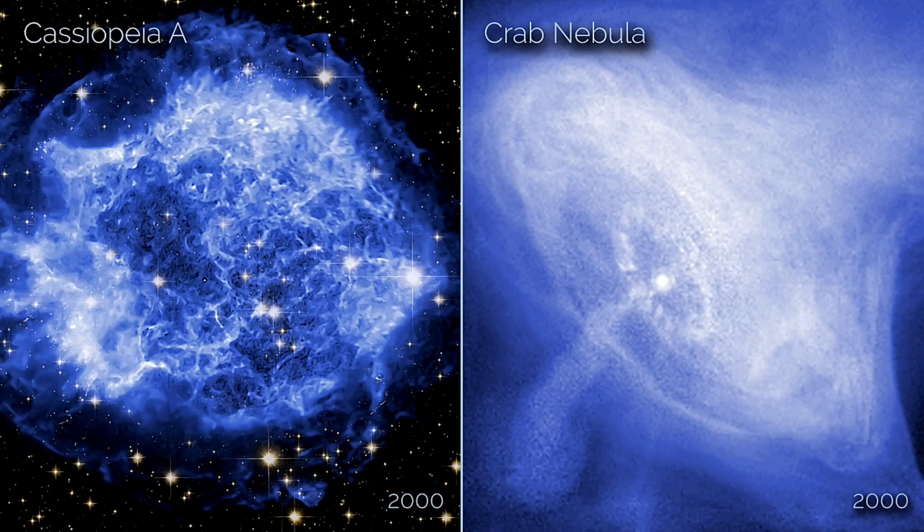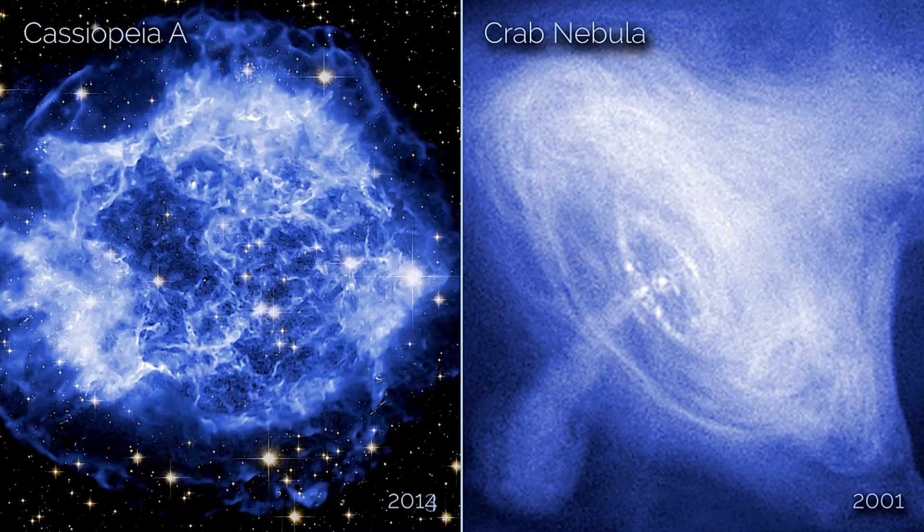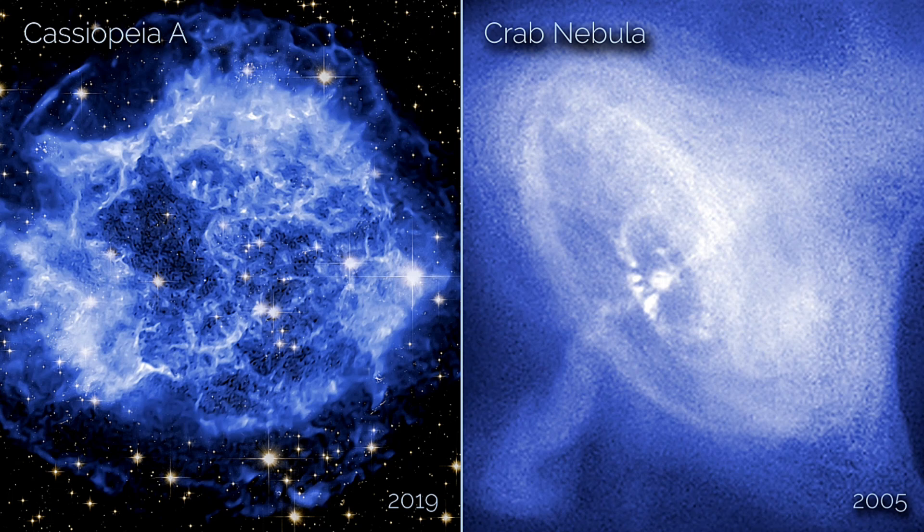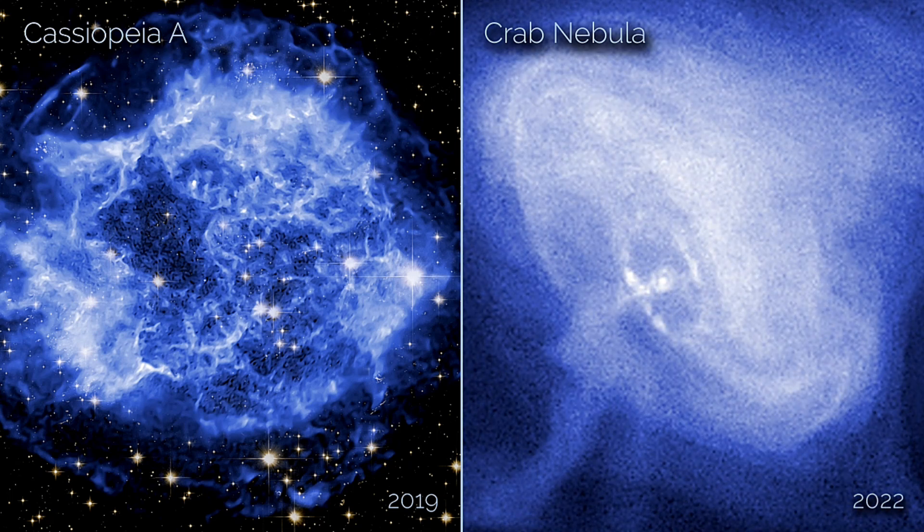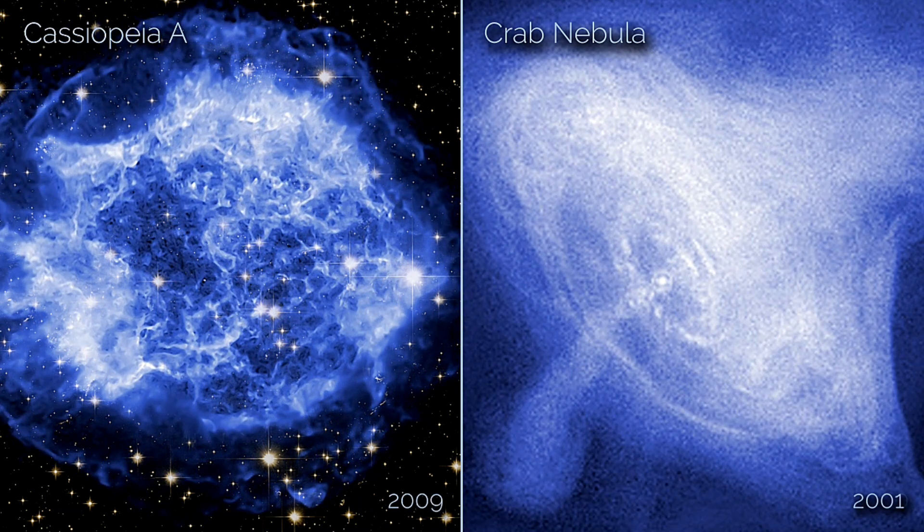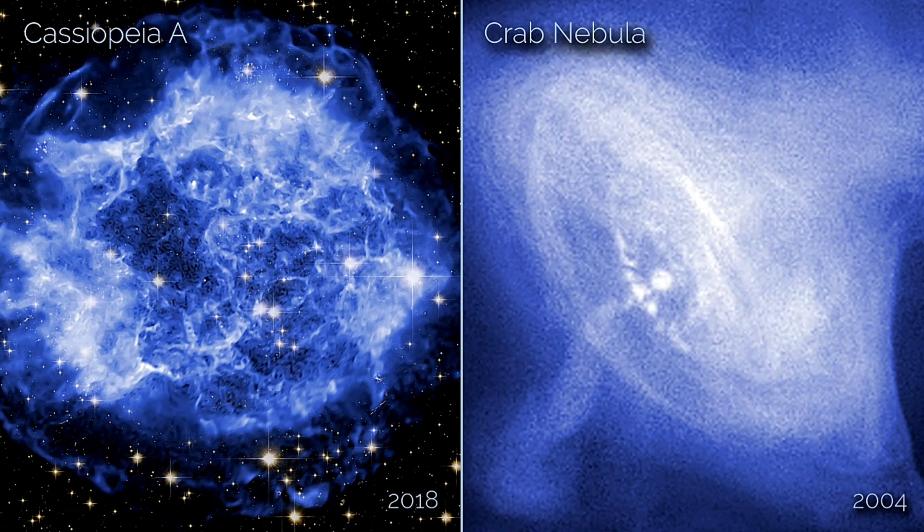New films showcasing two of the most renowned celestial objects, the Crab Nebula and Cassiopeia A, have been unveiled by NASA's Chandra X-ray Observatory. These movies, compiled from X-ray data gathered by Chandra over approximately 20 years, reveal significant changes in the debris and radiation left after the explosions of two massive stars in our galaxy.